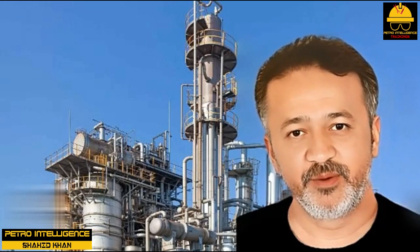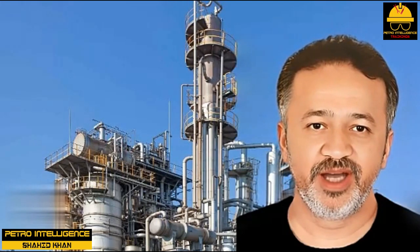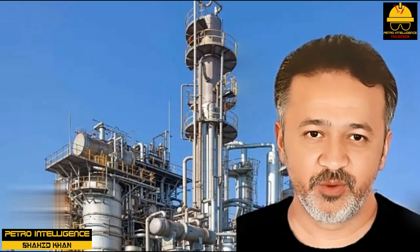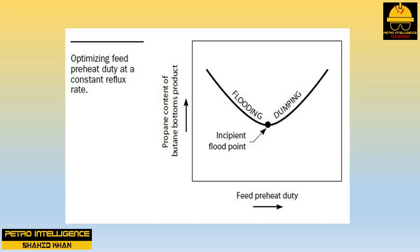Trays suffer from lost efficiency as a result of both flooding and dumping. Trays have some entrained droplets of liquid lifted by the flowing vapors to the trays above — this tends to blow butane up into the lighter propane product. Perforated trays always have some leakage of liquid through the tray deck to the trays below — this tends to drip propane down into the heavier butane product. When we increase feed preheat and the reboiler duty is automatically reduced, dumping increases but entrainment decreases. If the trays below the feed point were flooding, increasing feed preheat would improve fractionation efficiency; if they were dumping, it would reduce efficiency. The feed preheat duty that minimizes the propane content in the butane bottoms product represents the optimum preheater duty.